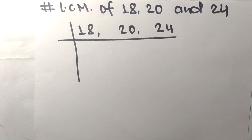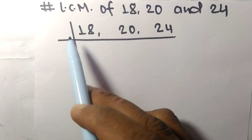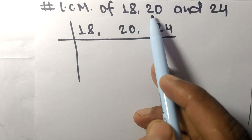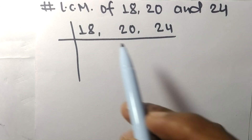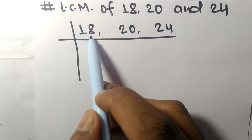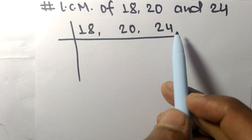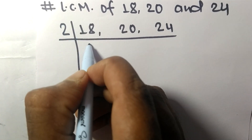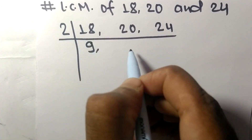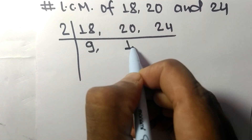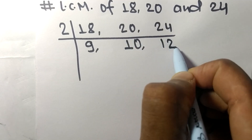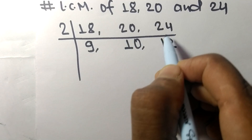Today in this video we shall learn to find the LCM of 18, 20, and 24. All these numbers are divisible by 2: 2 times 9 is 18, 2 times 10 is 20, 2 times 12 is 24.